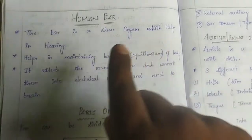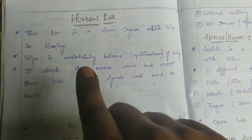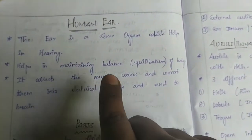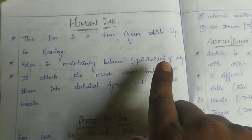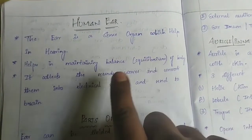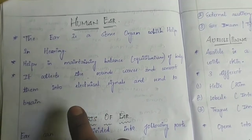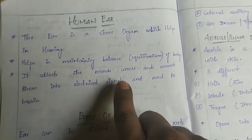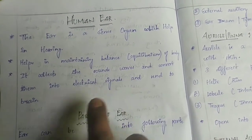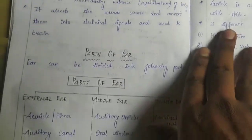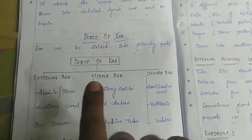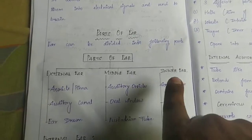The ear is a sense organ which helps in hearing. It helps in maintaining balance and equilibrium of the body. Sound waves are converted into electrical signals, which are then interpreted by the brain. The ear has three parts: external ear, middle ear, and inner ear.